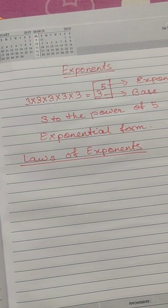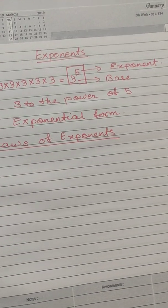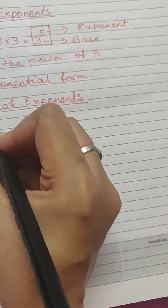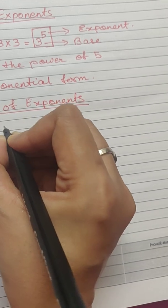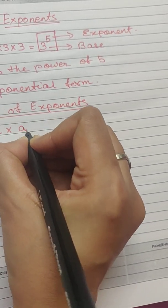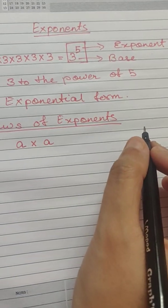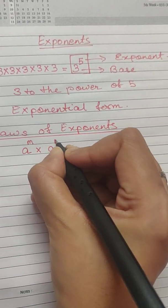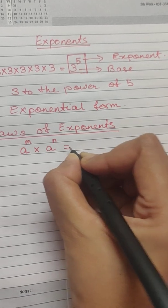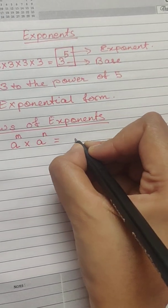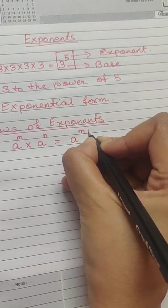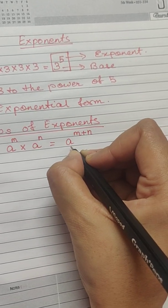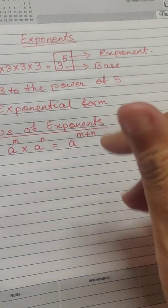This is just a recap of what we have done in class 7. So, the first law states that when there are two bases of the same type or same bases but with different exponents, then we simply add the exponents and raise it to the power of the base and voila, we have our answer.